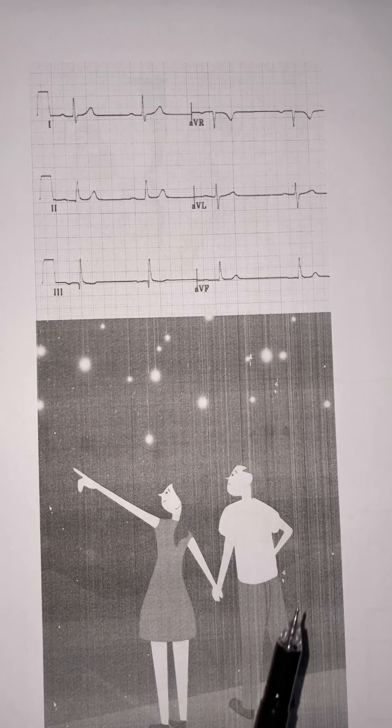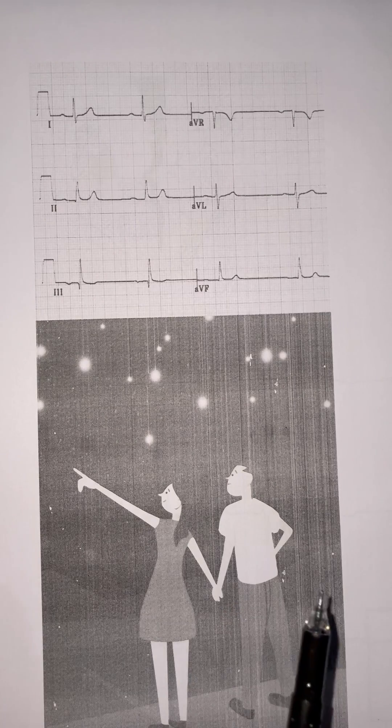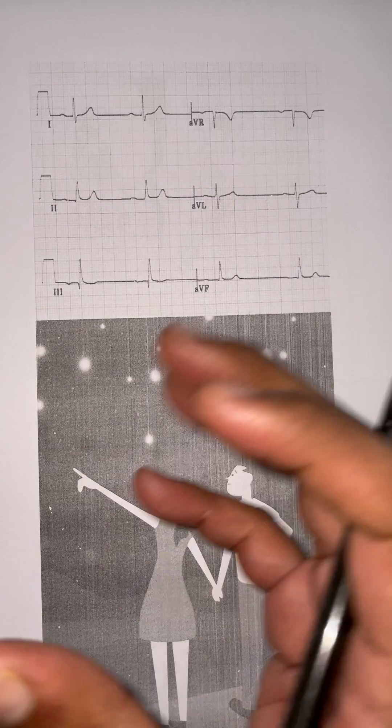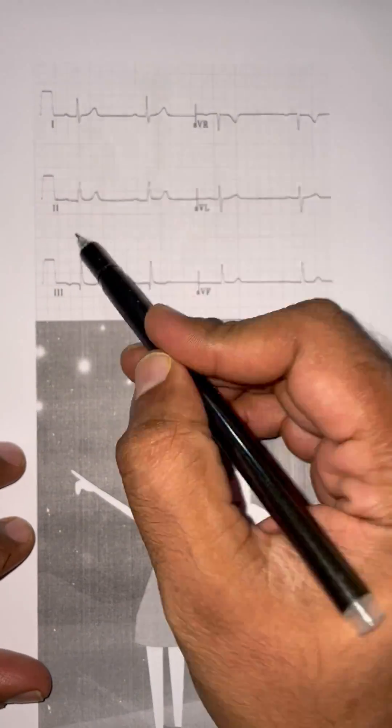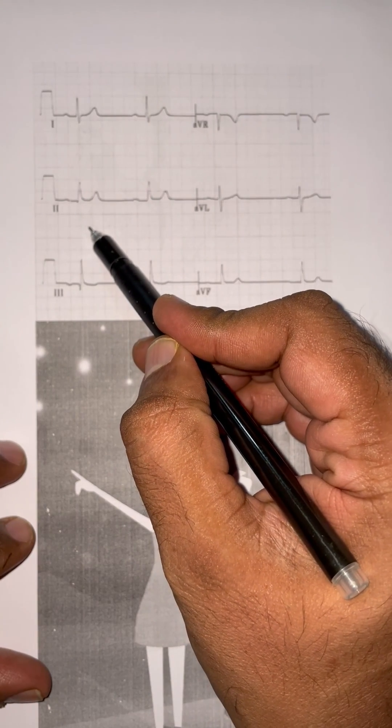Hello guys, this is Dr. Murali Bharatwaj on the Vongo app. Let us look at the axis deviation on ECG. How do you identify? Just lead one and lead two, you need to look for.